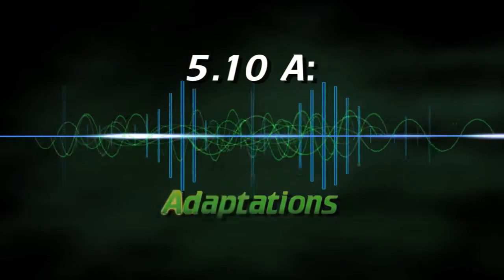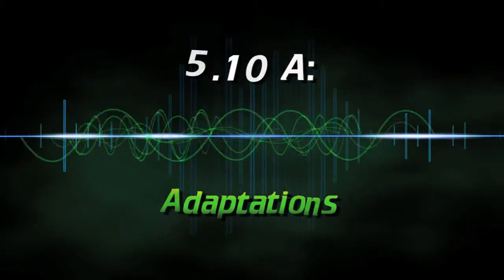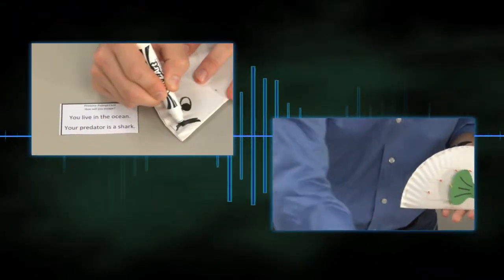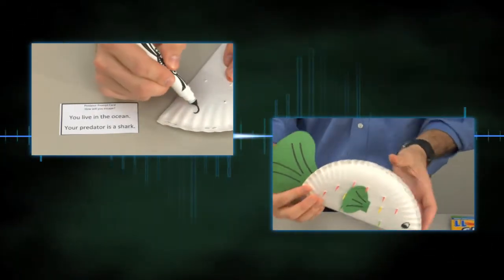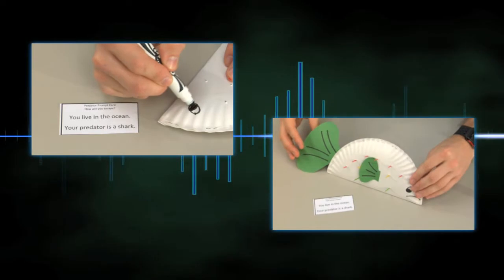5.10a Adaptations. In this activity, students create an animal with specific adaptations to help it evade predators and survive in its environment.